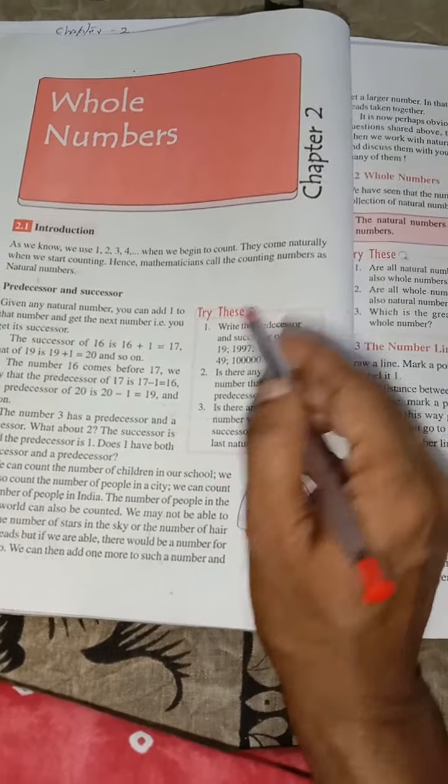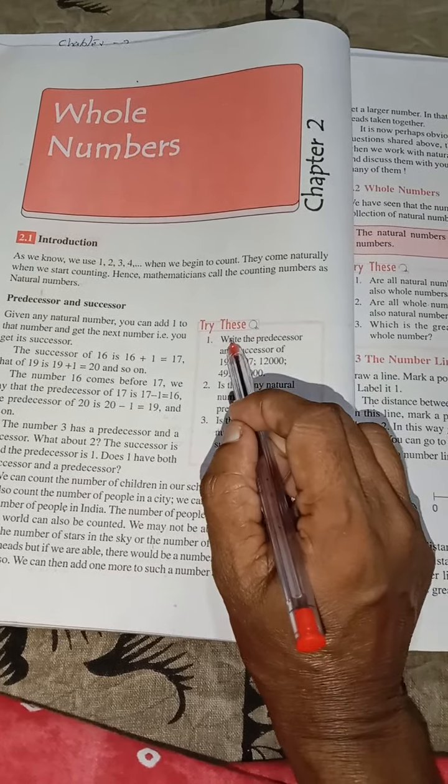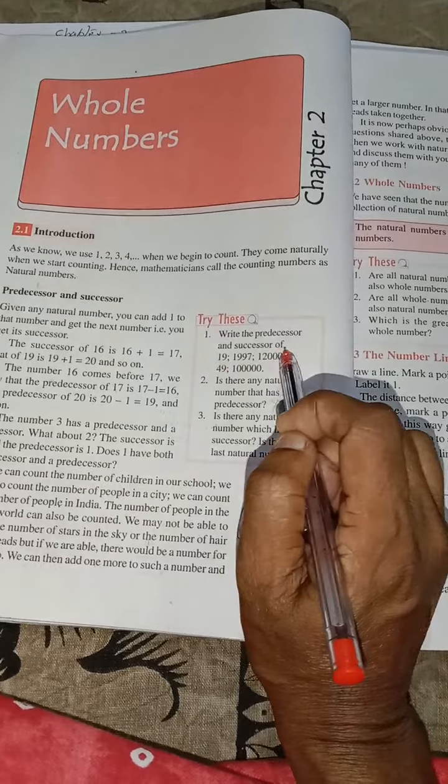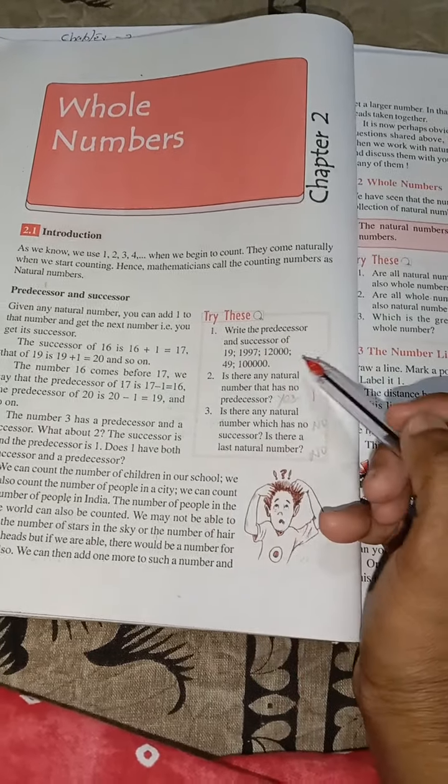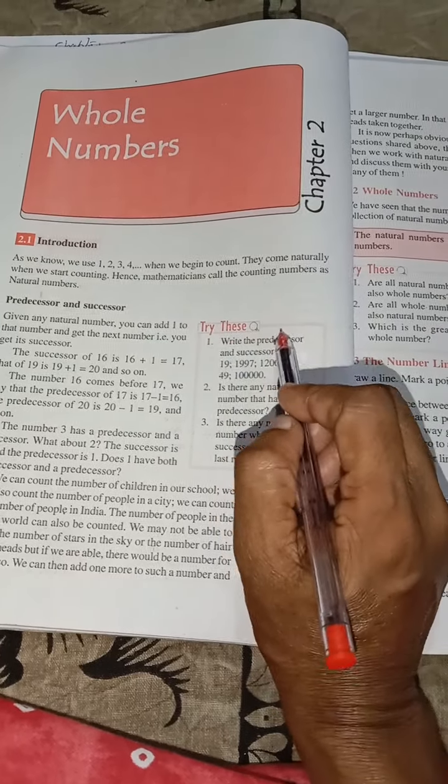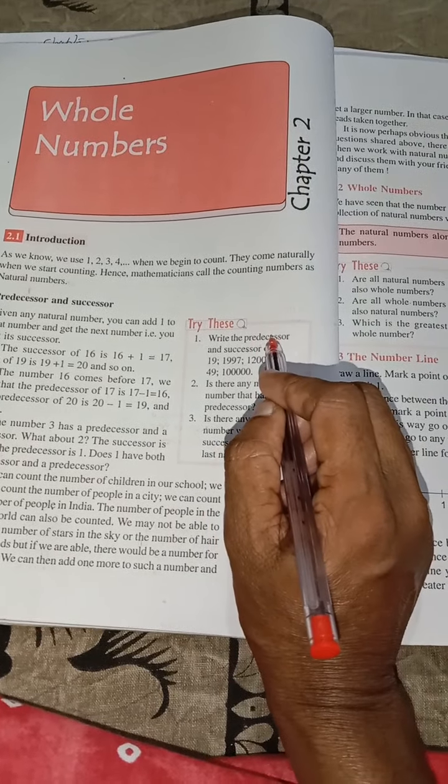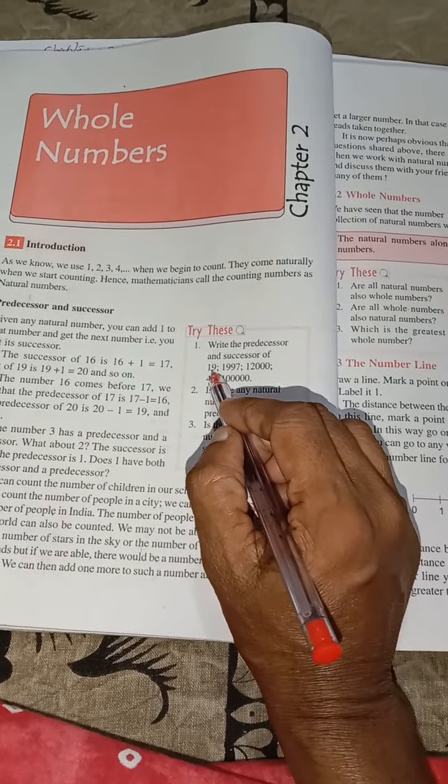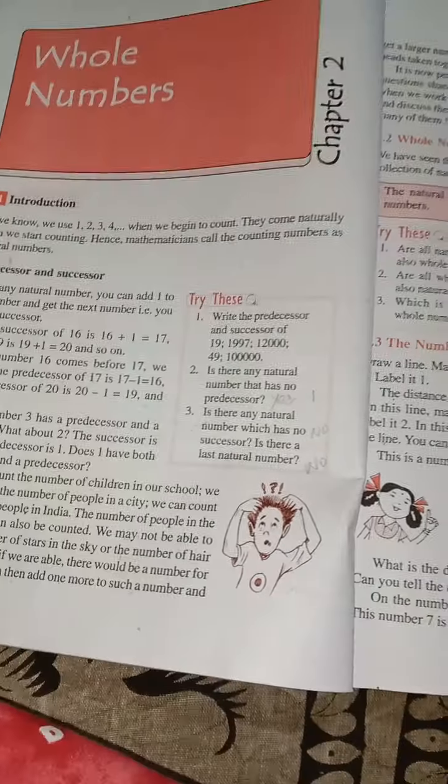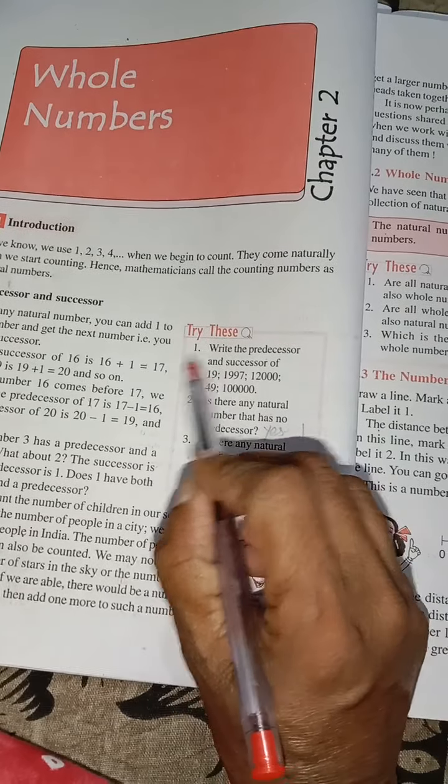In this try these problems. First one, write the predecessor and successor of 19, 1997, 12,049 and 1 lakh. So what is meant by predecessor? Predecessor is the number which is before. What is the predecessor of 19? The predecessor of 19 is 18.